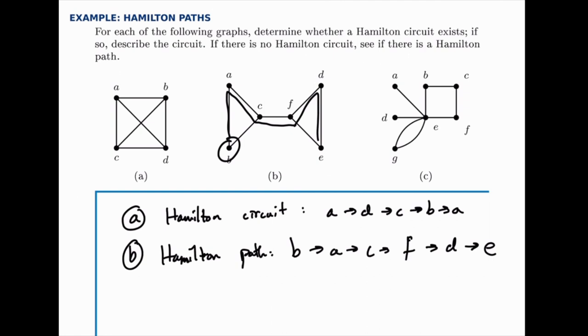For part C, we try similarly, and it should be clear that since A and D have a degree of 1, you'd have to start at one of those and end at the other. Because there's no way to start somewhere else and go to A and then continue on from there because there's only one edge connecting to A. So let's say for the sake of argument, we start at A.